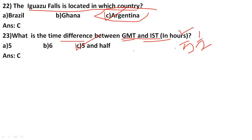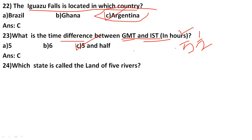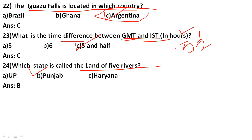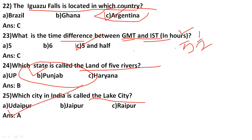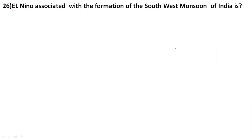Which state is called the Land of Five Rivers? The correct answer is B, Punjab. Punjab is called the Land of Five Rivers. Which city in India is called the Lake City? The answer is Udaipur — that is always a very easy question.